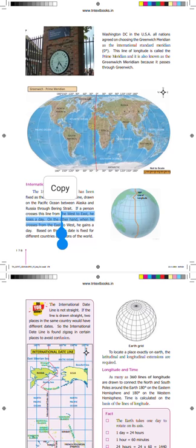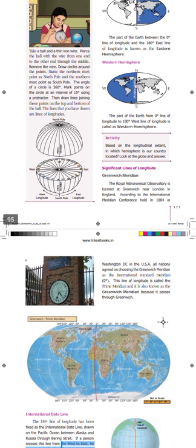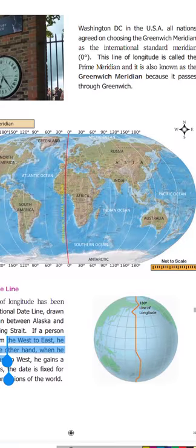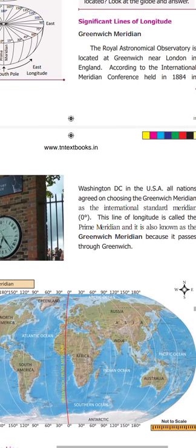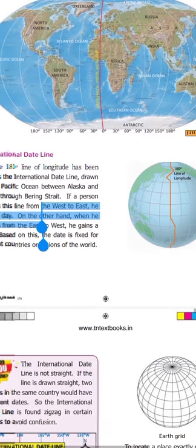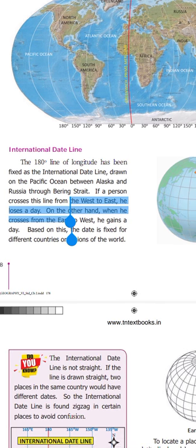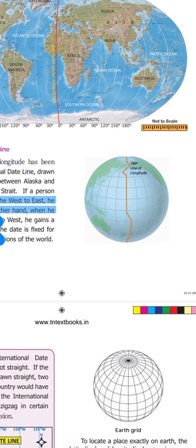Good morning children. Previously we studied about longitudes and the significant lines of longitude, including the Greenwich Meridian. Today we will see how the Greenwich Meridian is helpful as an international standard meridian to calculate time, and also what is the international date line — which longitude we use to calculate the date.